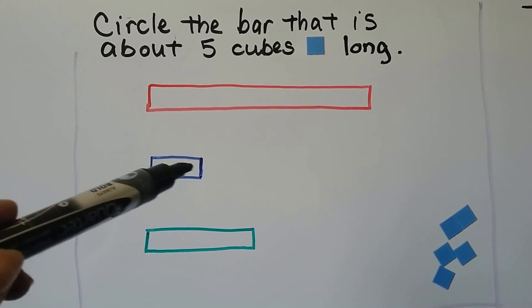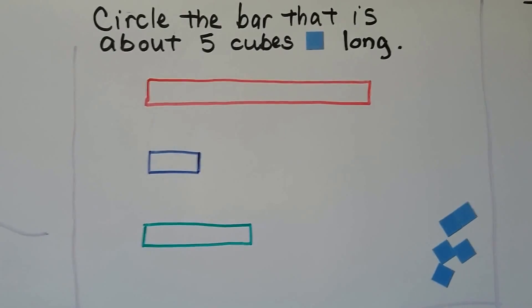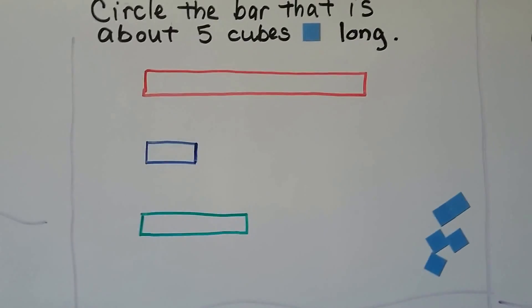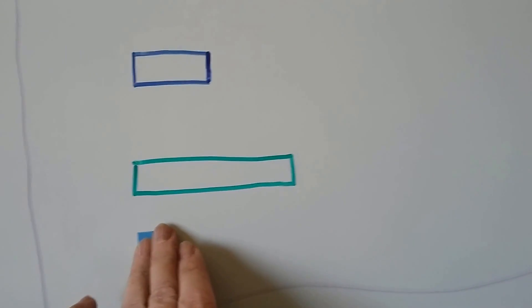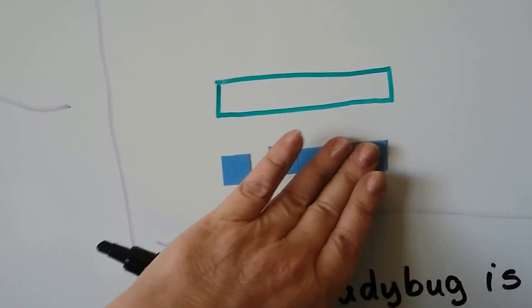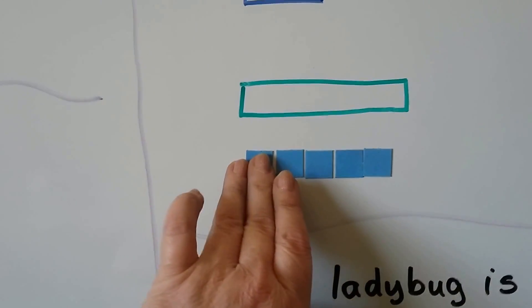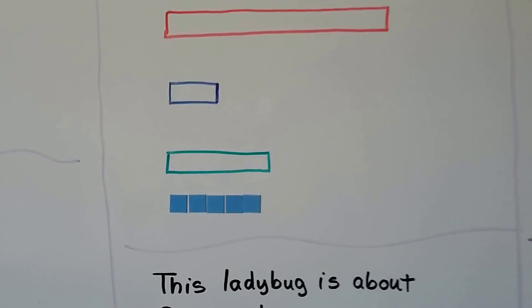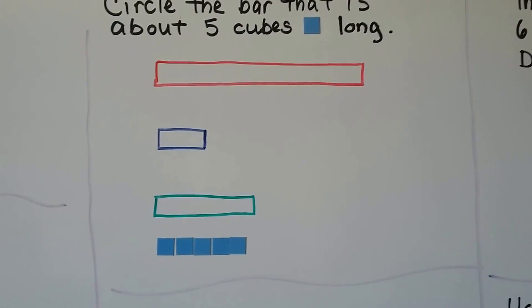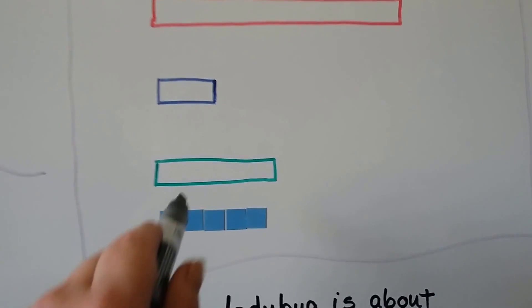How about the blue one? Can we fit five of these cubes long here? How about the green one? We could actually take the cubes and line them up with the bars and see which one is about five cubes long. Now we can see that the green one. The green bar is about five cubes long. It's a little longer, so it's about five cubes long.